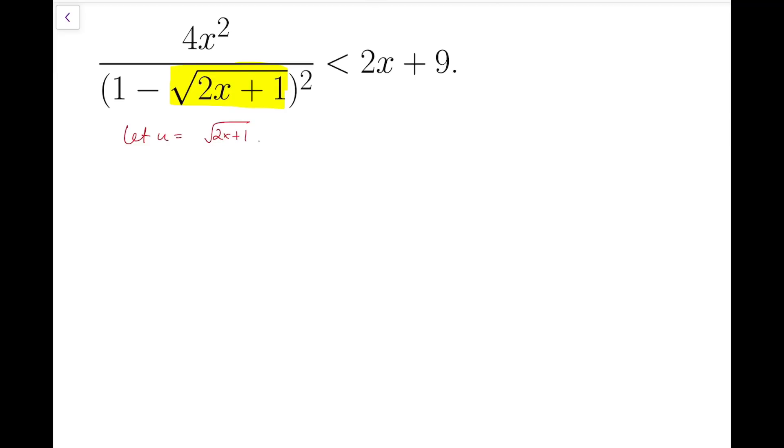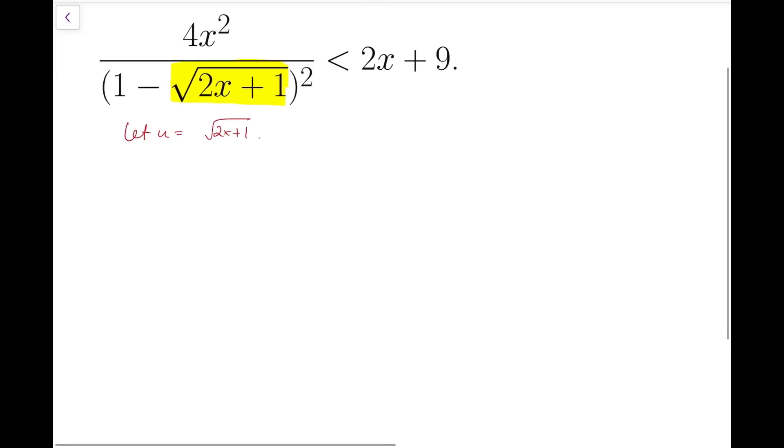Now I'm going to make x the subject of this formula. So square both sides, u squared equals 2x plus 1. And so x equals u squared minus 1 over 2.